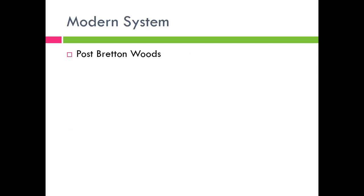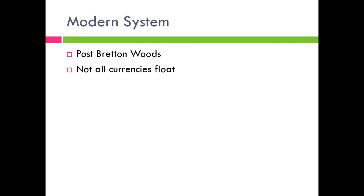We are now in the modern post-Bretton Woods system. Not all currencies float — until the mid-2000s, China was fixed to the dollar, for example. But the U.S. is still at the center of the currency system, and most major currencies — the U.S. dollar, Japan, Europe, etc. — float. Some countries, like oil exporters, peg to the dollar, but for the most part, economists advocate for free capital movements and floating exchange rates.